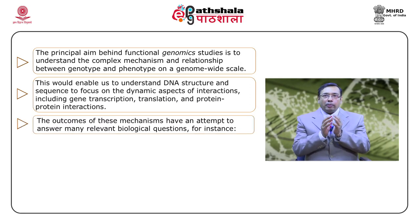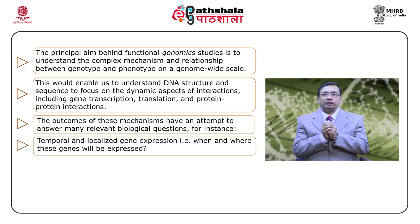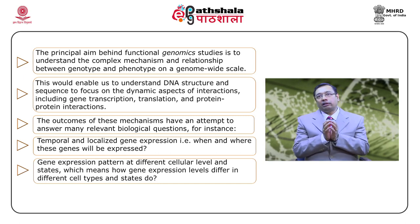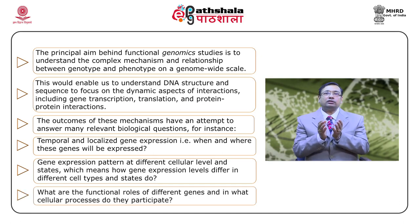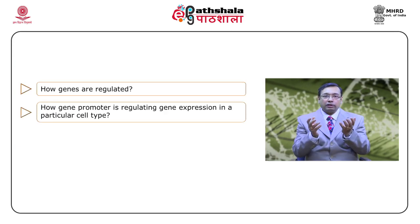The outcome of these mechanisms attempts to answer many relevant biological questions. For instance: number one, temporal and localized gene expression — meaning when and where these genes will be expressed; number two, gene expression patterns at different cellular levels and states — how gene expression levels differ in different cell types and states; third, what are the functional roles of different genes and in what cellular processes do they participate; fourth, how genes are regulated; fifth, how gene promoters are regulating gene expression and in what cell type.